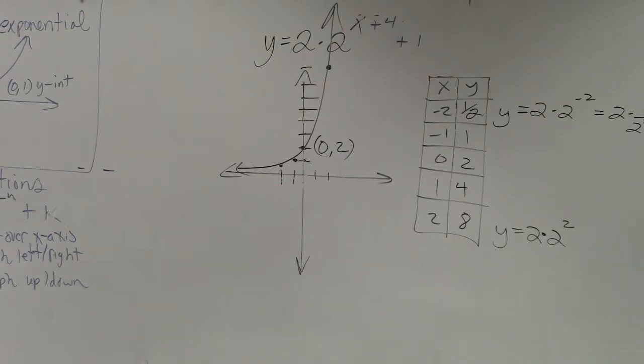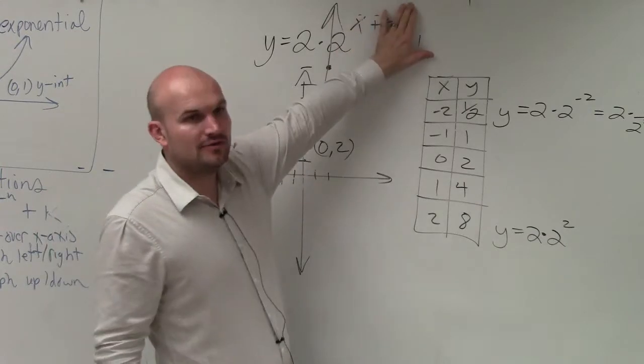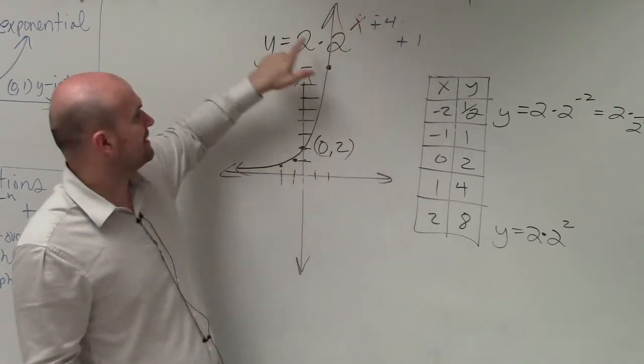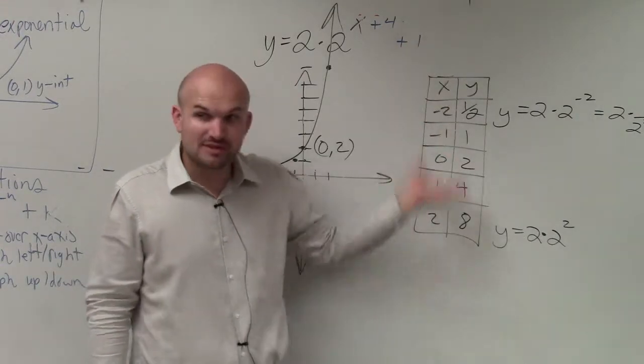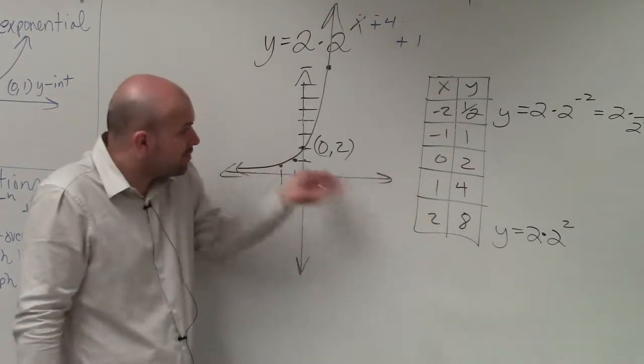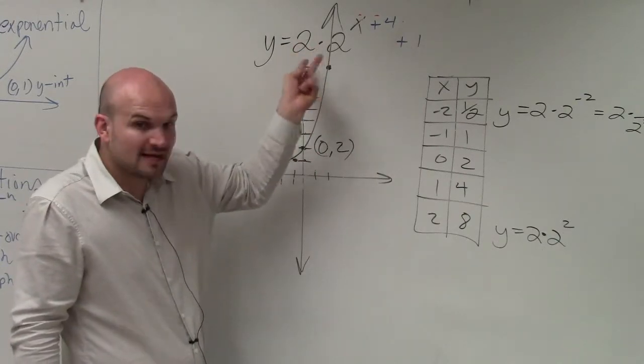All we're simply going to do is, as I mentioned, if you have an equation like this, the first thing to do is forget about the 4 and the 1 and just graph it as y equals 2 times 2 to the x. I showed you how to do that using the table because that's very important - the y-intercept is not always going to be (0,1) when you have an a not equal to 1.